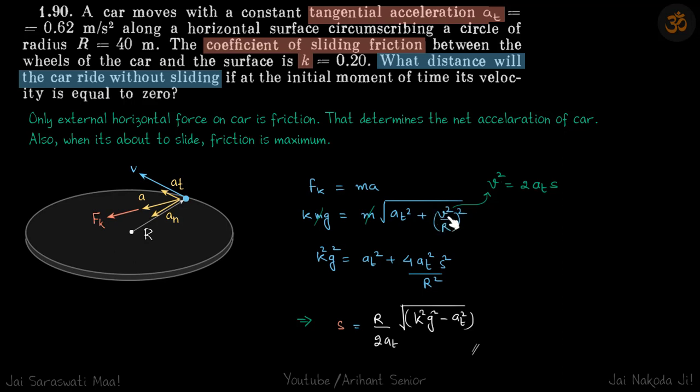What is v squared? Because the tangential acceleration is constant, v squared is given as 2at times s, from our equation of motion.